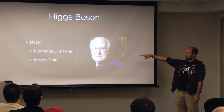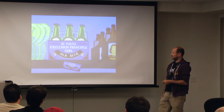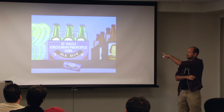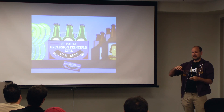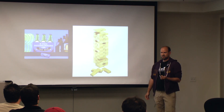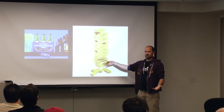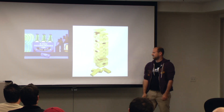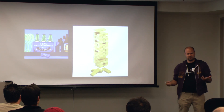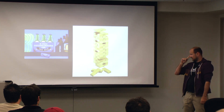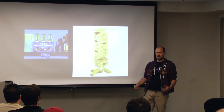Going back to the first slide — bosons have integer spin, everything else has half-integer spin. Things with half-integer spin have to obey the Pauli exclusion principle, which just means that things of the same energy can't occupy the same space. It's kind of like playing Jenga — if all of these are actual particles, you can't have more than one particle per block. The same is also true if you take out a block — you're leaving a hole. That's how most matter works. Except for bosons — they don't have to obey the Pauli exclusion principle, so you can remove a block and the block is still there. They all kind of occupy the same space.